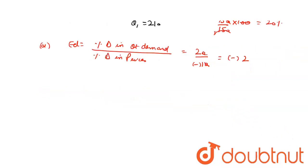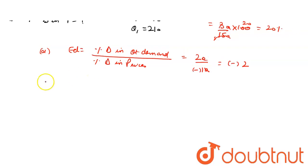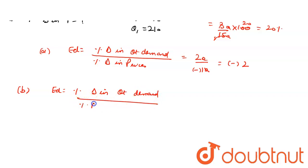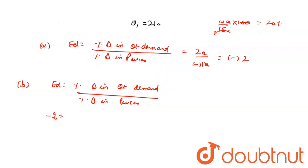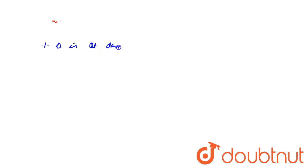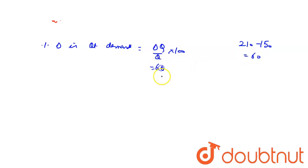Now we need to find percentage change in price for Part B, where Q is 150 and Q1 is 210. Elasticity of demand equals percentage change in quantity demanded upon percentage change in prices — same formula. Elasticity of demand is minus 2. Percentage change in quantity demanded equals delta Q upon Q into 100. Delta Q equals 210 minus 150, which is 60. So 60 upon 150 into 100 — zeros cancel — 5 threes are 15, and this gives us 40%.